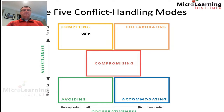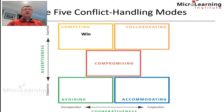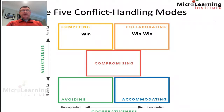The first mode is in the top left corner, where we want to be assertive but are not concerned about being cooperative. Our focus is on winning, and Thomas and Kilman referred to this as the competing approach. Alternatively, we could collaborate — being both cooperative and assertive — to arrive at a win-win solution by working with colleagues.